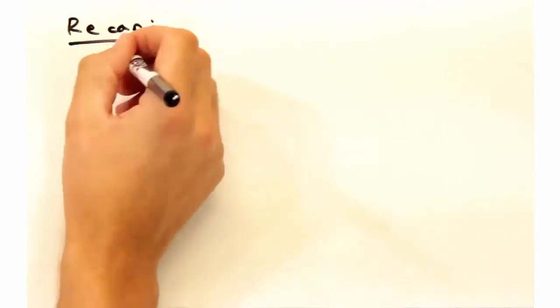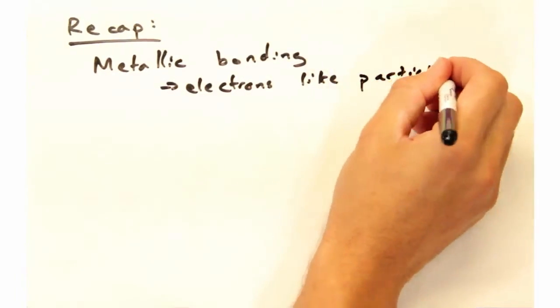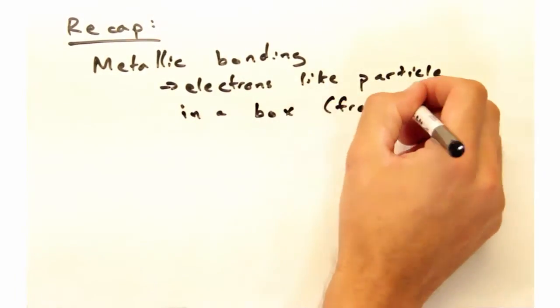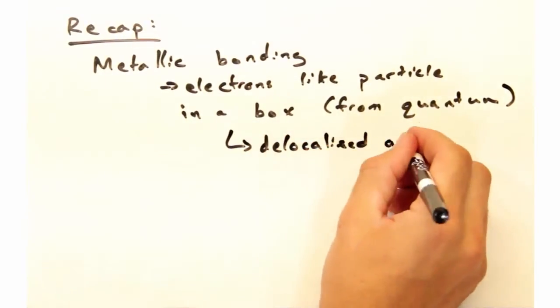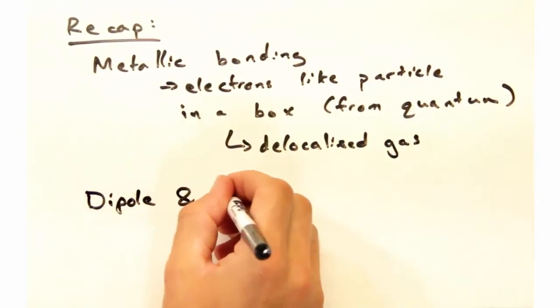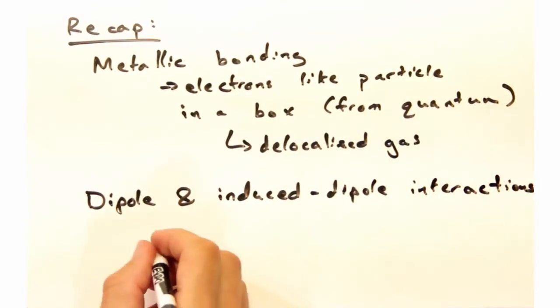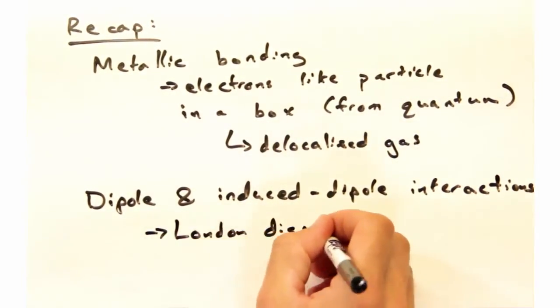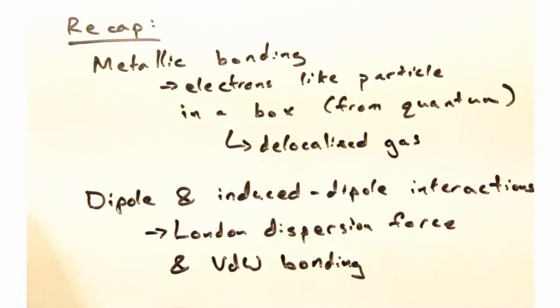Okay, this looks like a good point to recap. Today we introduced metallic bonding, specifically approximating the electrons as a particle in a box, and thus a delocalized gas. Then we looked at various types of dipole and or induced dipole interactions, their relative strengths, and how nonpolar molecules can bond through spontaneous dipoles formed from quantum fluctuations as in the London dispersion force.